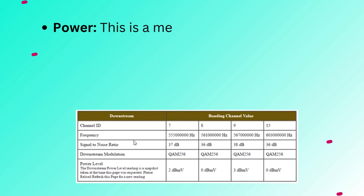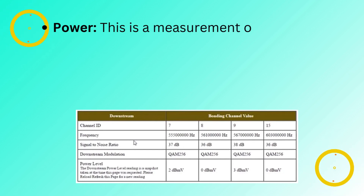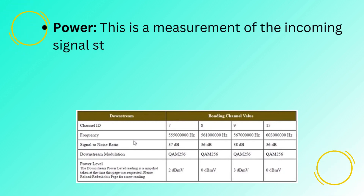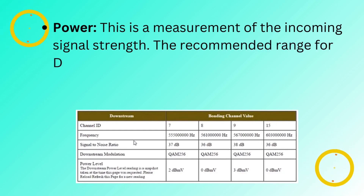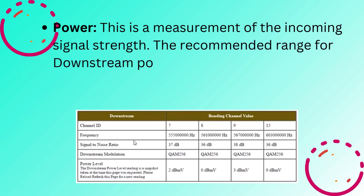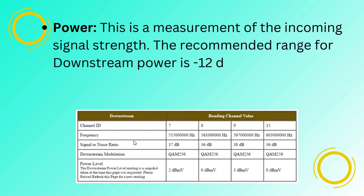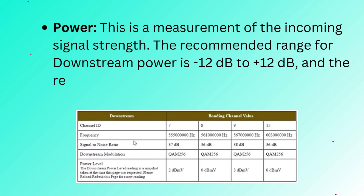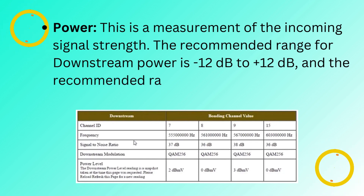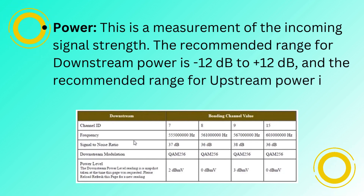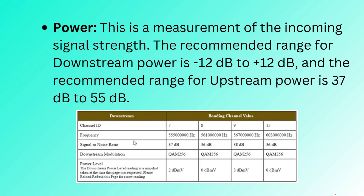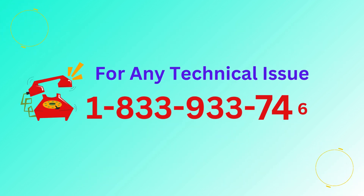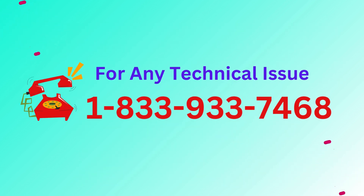Power: this is a measurement of the incoming signal strength. The recommended range for downstream power is minus 12 dB to plus 12 dB, and the recommended range for upstream power is 37 dB to 55 dB.